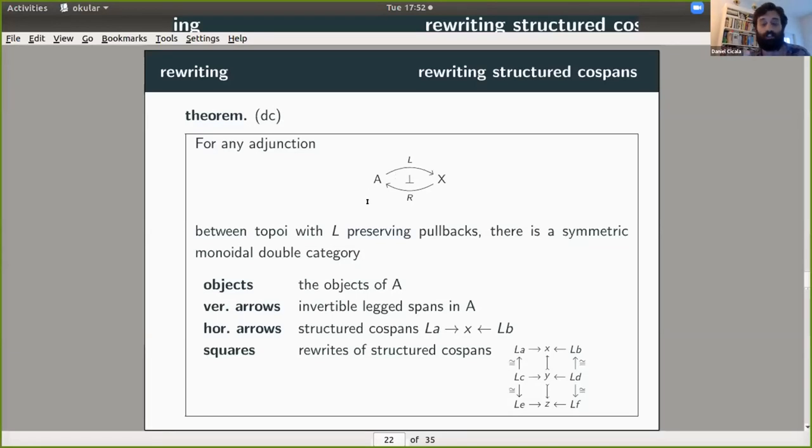And so we can take this and build a double category of rewrites. And so again, we're going to start with this adjunction that I mentioned earlier. We do want our left adjoint to preserve pullbacks. Then we get this, actually better than a double category, symmetric monoidal double category, whose objects are from A, that is the interface types. The vertical arrows are kind of boring, but they're invertible-legged spans in A, but maybe they're not boring after seeing some of the talks the other day. Horizontal arrows are where our structured cospans live.